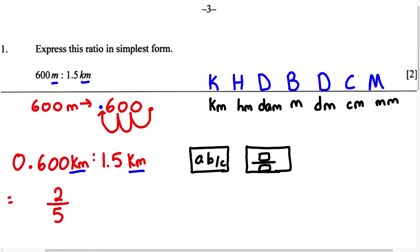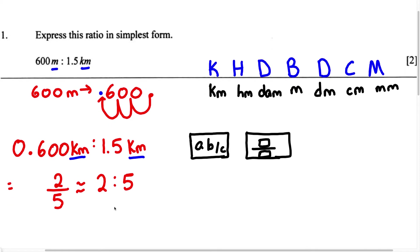We know there are three ways to write a ratio, and a fraction is one way. So 2 over 5 as a fraction can also be written as 2:5. But remember, we must put back the units. Because we had kilometers for our units, we must add kilometers in our ratio. Therefore our answer is 2 kilometers to 5 kilometers.